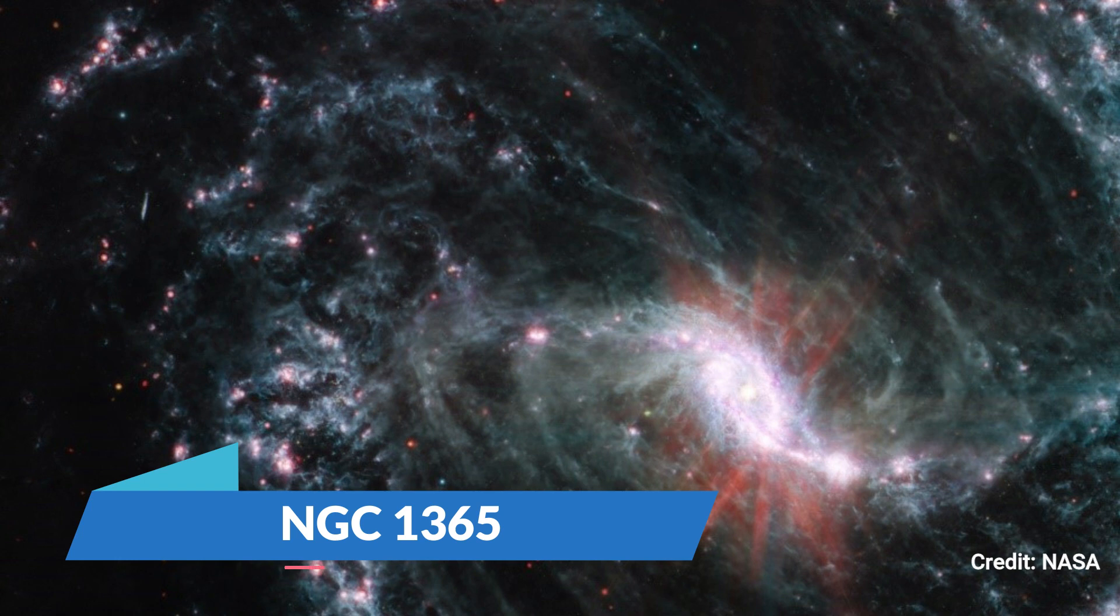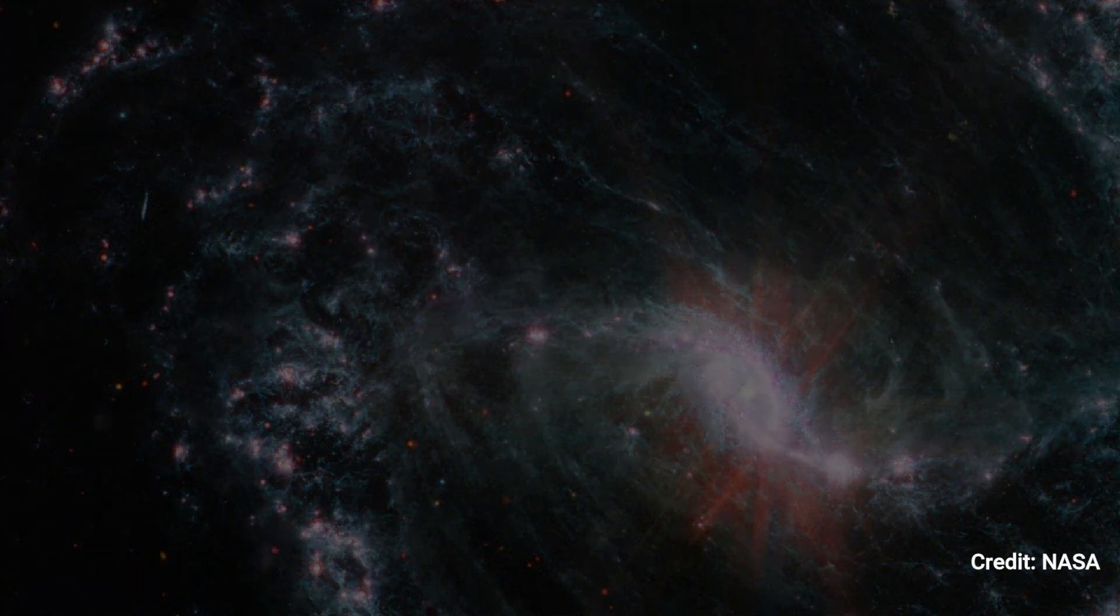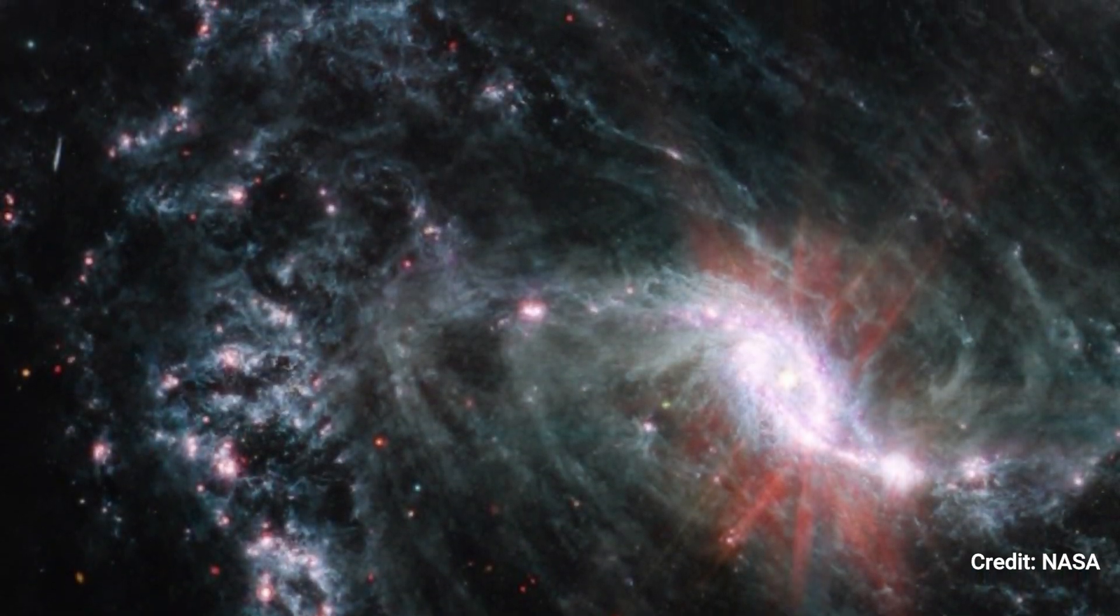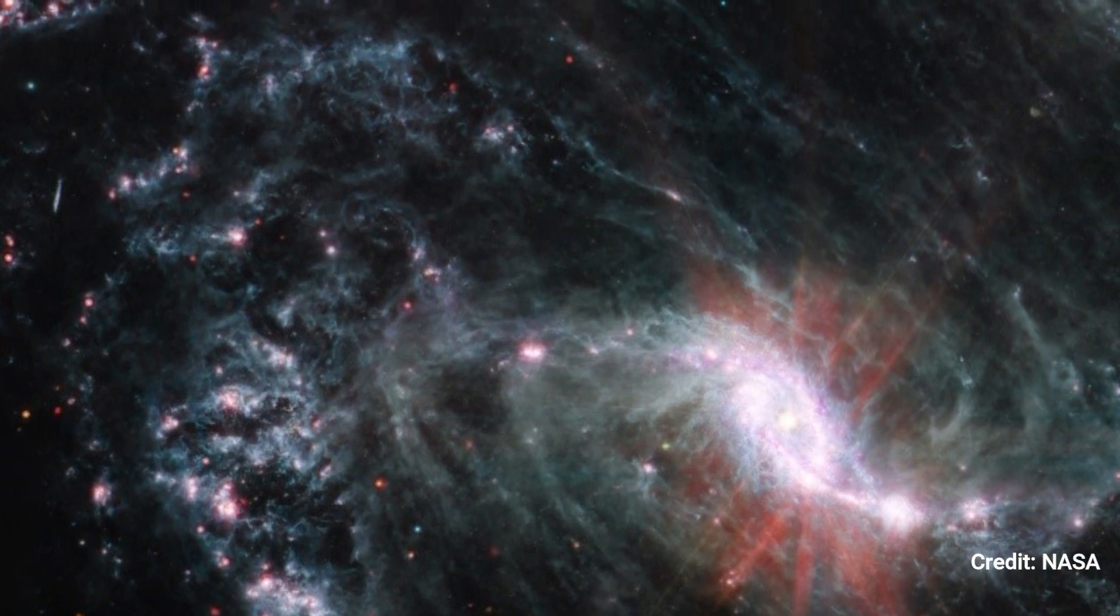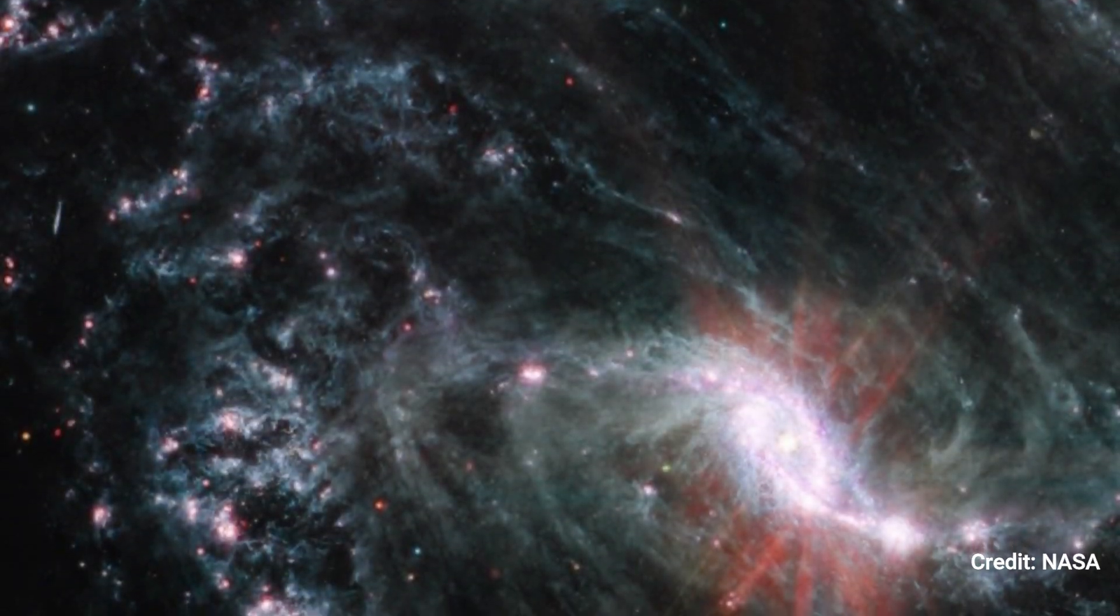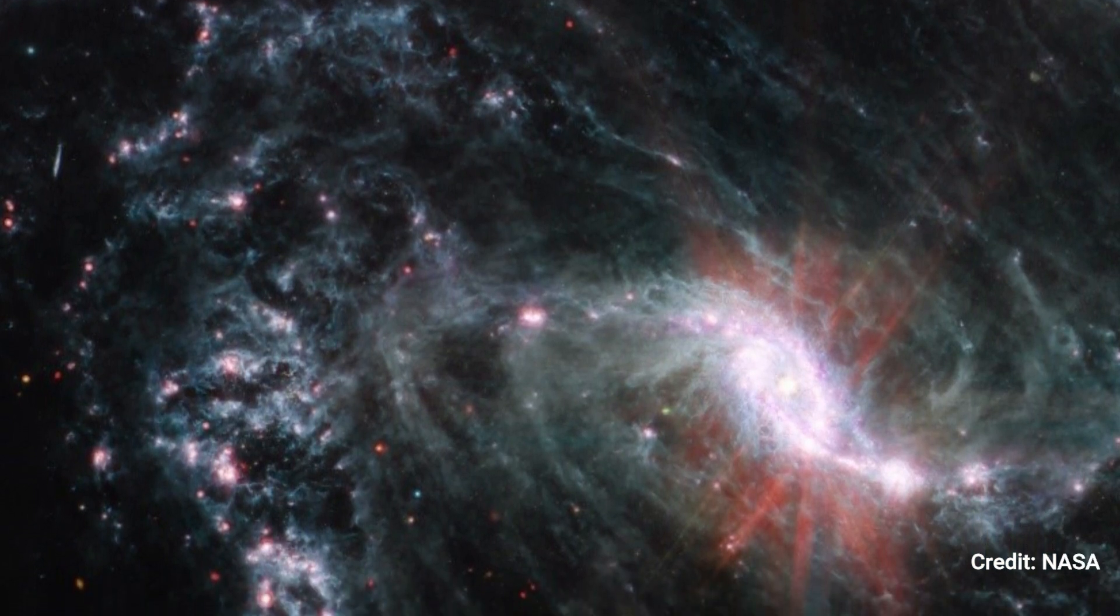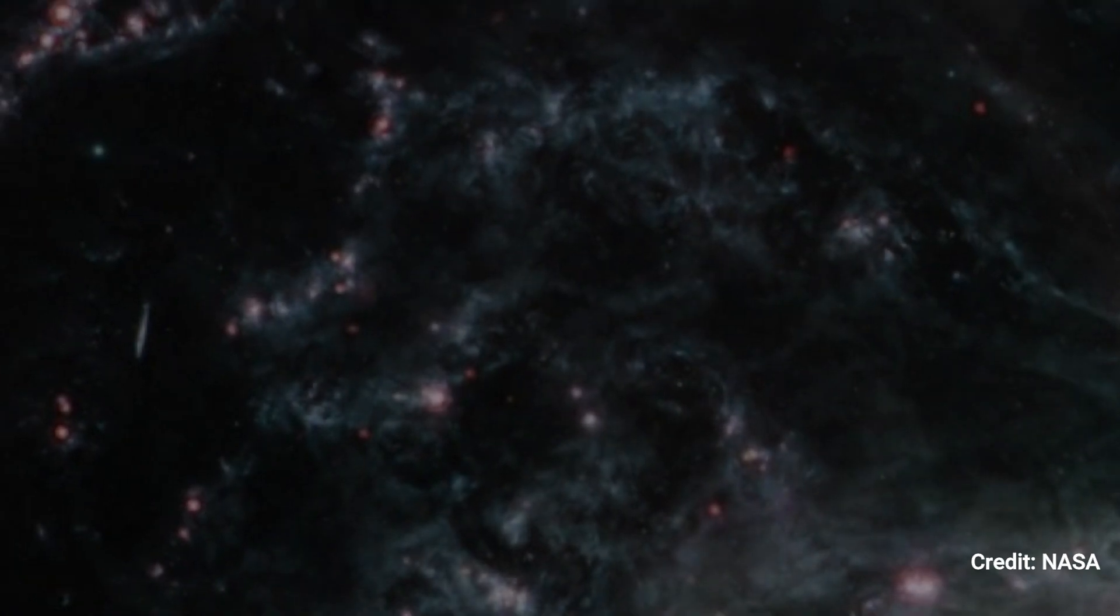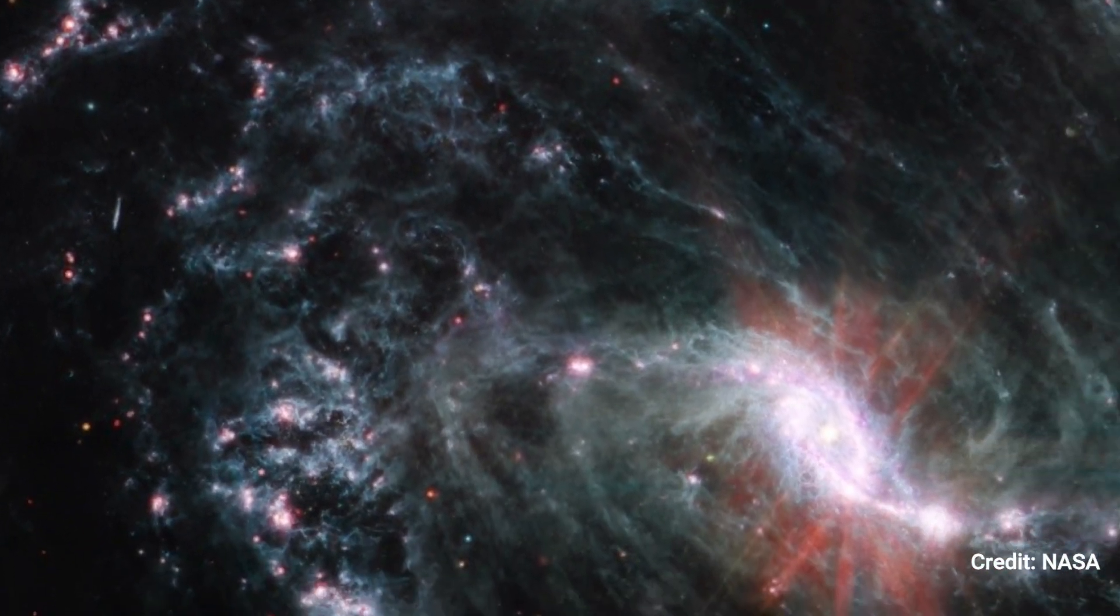NGC 1365. Scientists are receiving their first glimpse at how the creation of newborn stars affects the history of surrounding galaxies using NASA's James Webb Space Telescope's extraordinary resolution. NGC 1365, photographed with Webb's mid-infrared instrument, is one of 19 galaxies chosen for investigation by the physics at high angular resolution in nearby galaxies team.